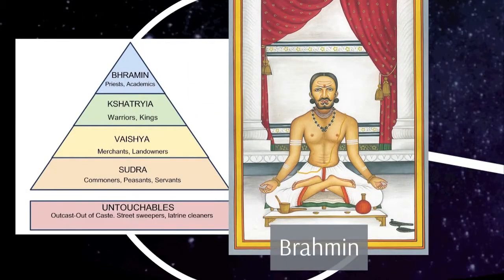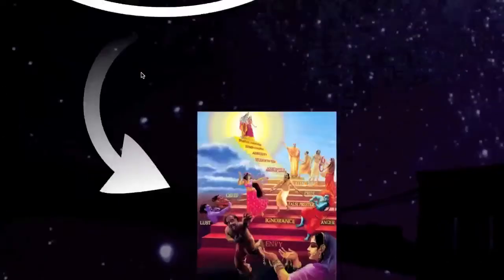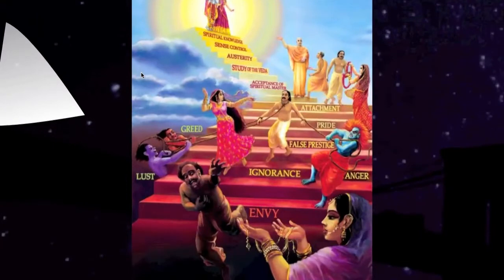So hopefully I've been selling this moksha idea to you and you want to achieve it. Let me tell you how. First, you have to climb the ladder of the caste system and eventually become a brahmin. But that's not enough — once you're a brahmin, you have to have constant devotion to your goal: you have to practice, meditate, do yoga, study, all of these things. Get rid of all bad emotions and move up this final ladder through study, sense control, and spiritual knowledge. Then you'll achieve moksha.